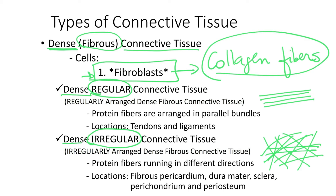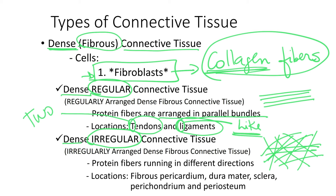Dense regular connective tissue has collagen fibers arranged in parallel bundles and is found in tendons and ligaments. Tendons and ligaments are basically the same tissue — the difference is what they connect. Tendons connect two different things: they are cords that connect muscles to bones. Ligaments connect things that are like: they are cords that connect bone to bone.